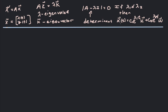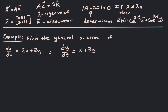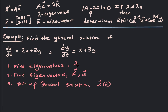If that's the case, then our general solution to the system of equations is going to be c1 e to the lambda 1t times the first eigenvector k, plus c2 e to the lambda 2t times the second eigenvector w. Our strategy is: first, find the eigenvalues lambda; second, find the eigenvectors k and w for each lambda; and third, set up the general solution in this form.